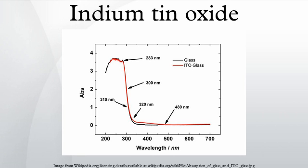It is transparent and colorless in thin layers, while in bulk form it is yellowish to gray. In the infrared region of the spectrum, it acts as a metal-like mirror.